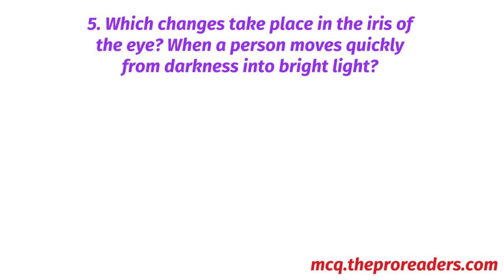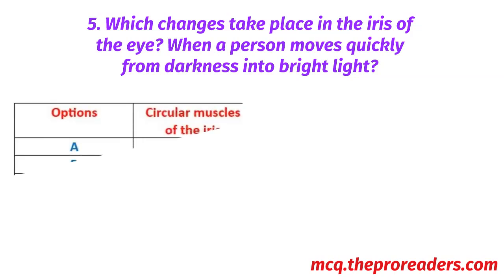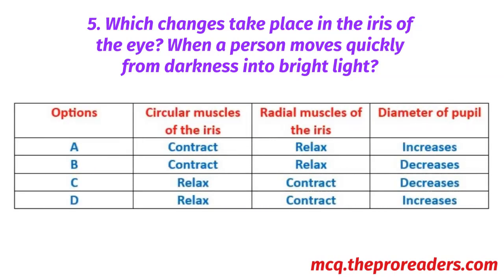Which changes take place in the iris of the eye when a person moves quickly from darkness into bright light? Options show circular muscles of the iris, radial muscles of the iris, and diameter of pupil. A: Contract, relax, increases. B: Contract, relax, decreases. C: Relax, contract, decreases. D: Relax, contract, increases. Option B — contract, relax, decreases — is the correct answer.